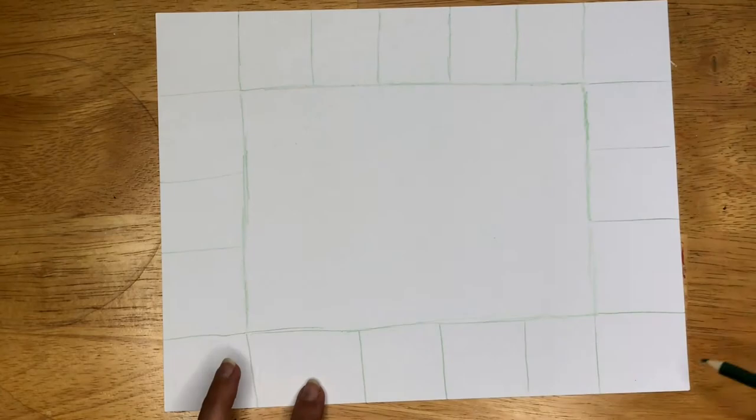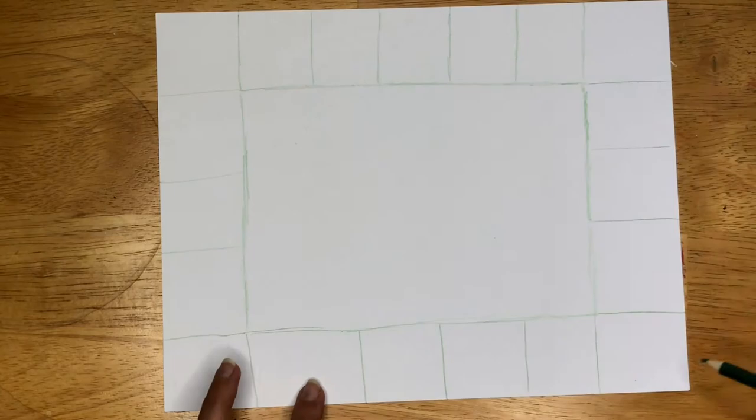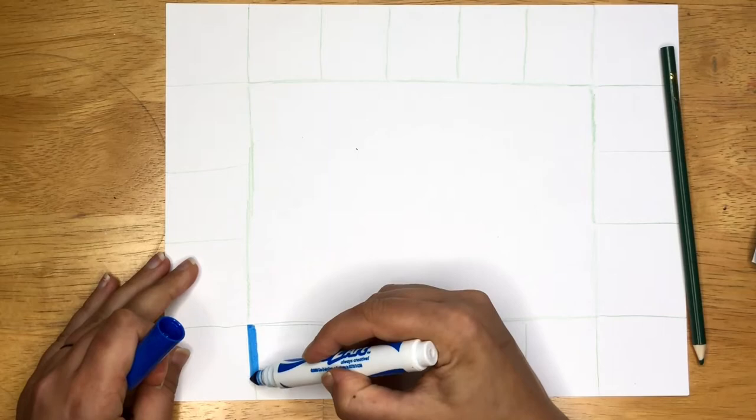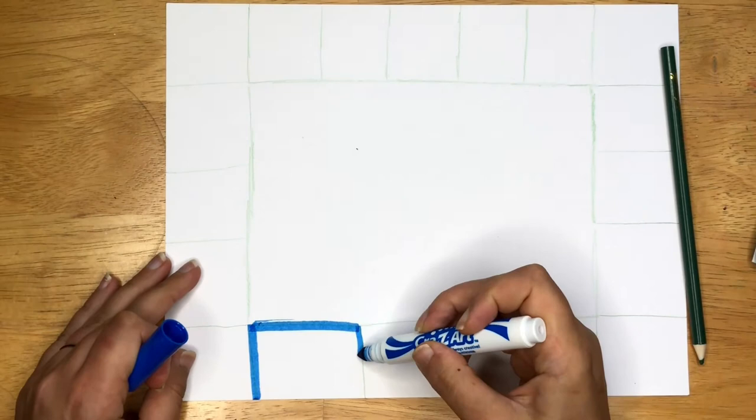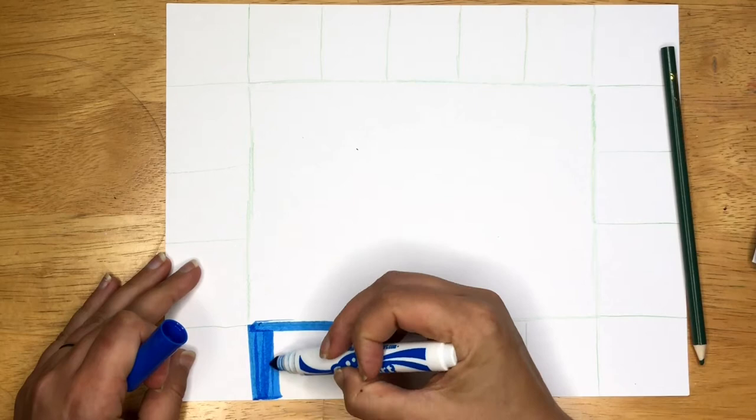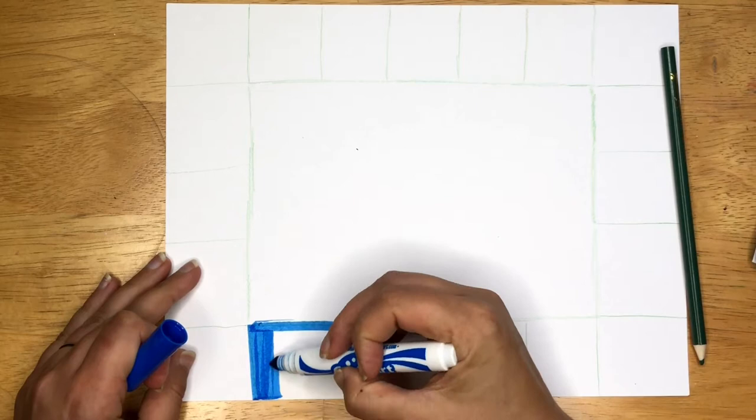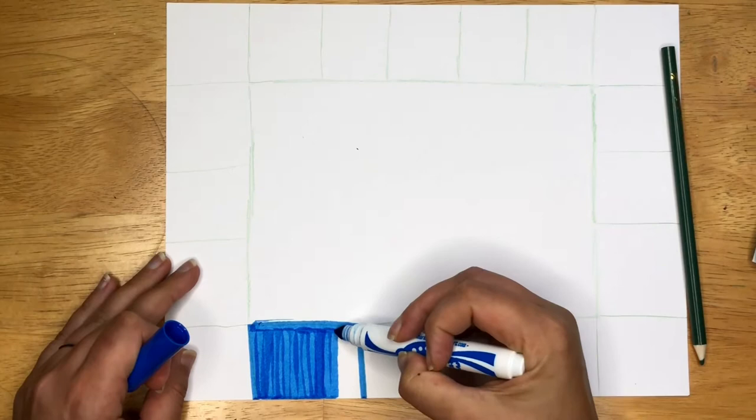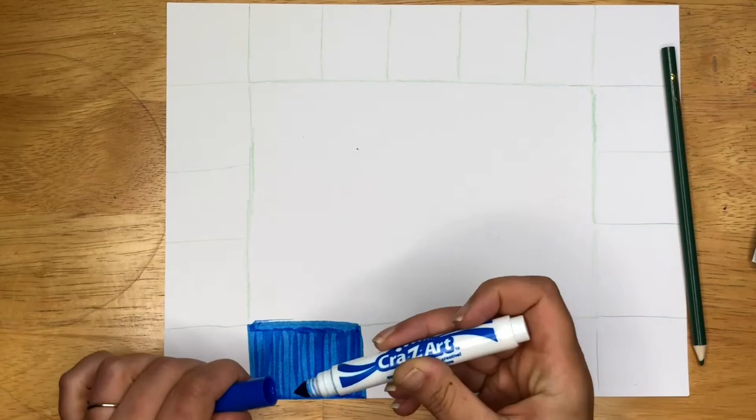And we can use a bunch of different media. We can use markers, we can use colored pencils. We're going to go ahead and we're going to fill in our boxes. Do so neatly, don't scribble. We want it to be a very consistent color. I'm going to do some marker, I'm going to do some paint, I'm going to do crayons and colored pencils. I'm going to do a lot of media on this one viewfinder before we go on our scavenger hunt.